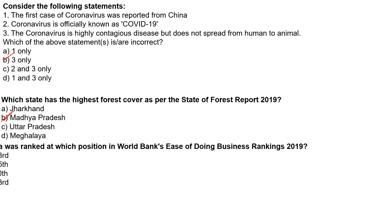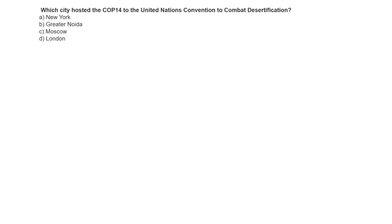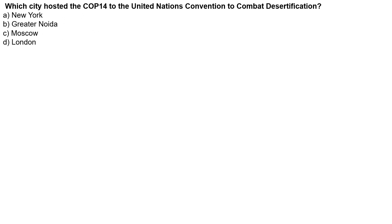The next question: India was ranked at which position in the World Bank's Ease of Doing Business ranking? The correct answer is the 63rd ranking.